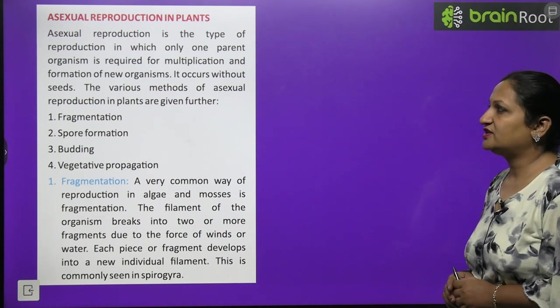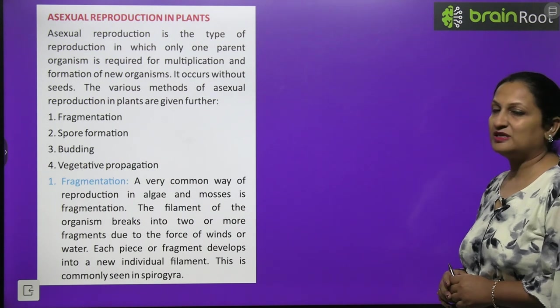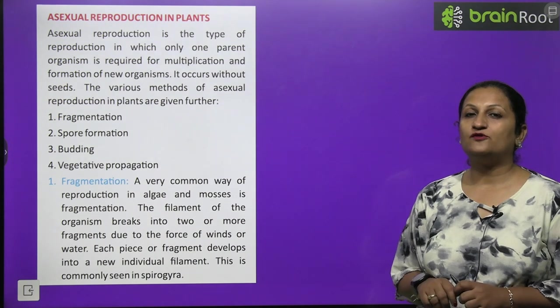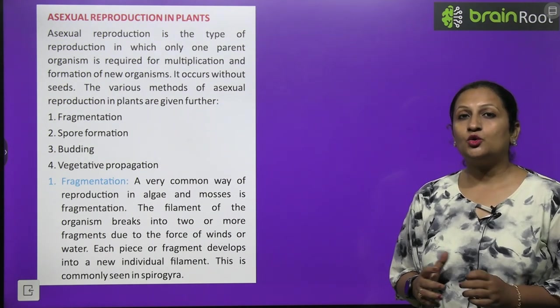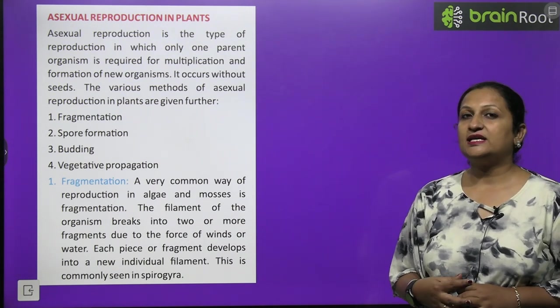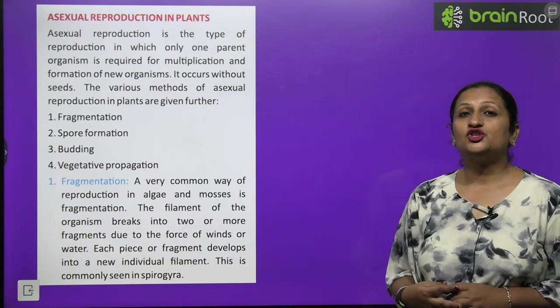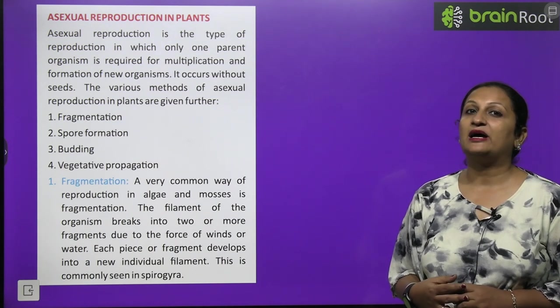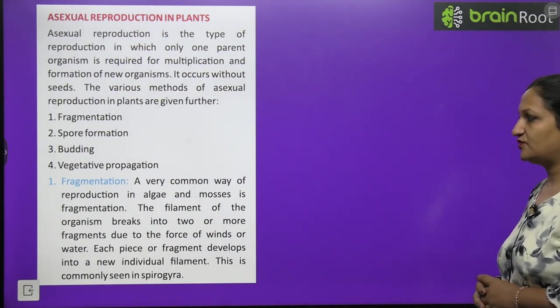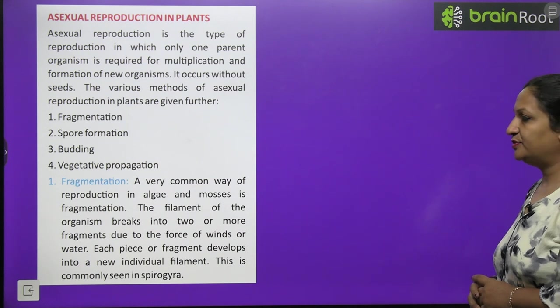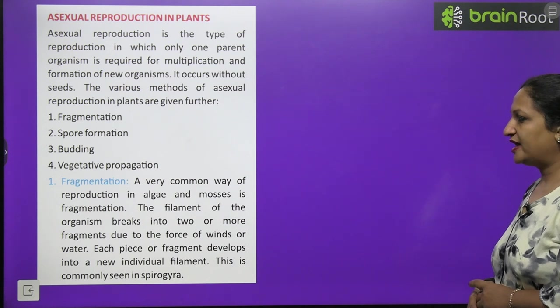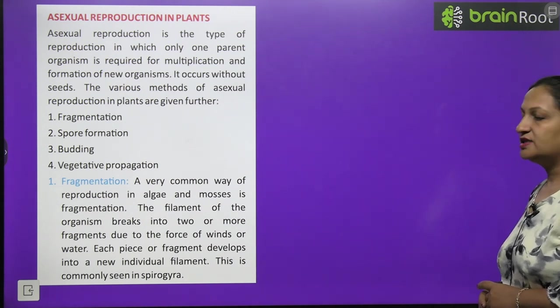The various methods of asexual reproduction in plants are given further. The first method is fragmentation. In fragmentation, the plant's body breaks into two or more parts and both parts, both fragments behave as a new individual. Fragmentation is easily seen in case of algae like spirogyra. A very common way of reproduction is fragmentation. The filament of the organism breaks into two or more fragments due to force of wind or water. Each piece of fragment develops into a new individual filament.